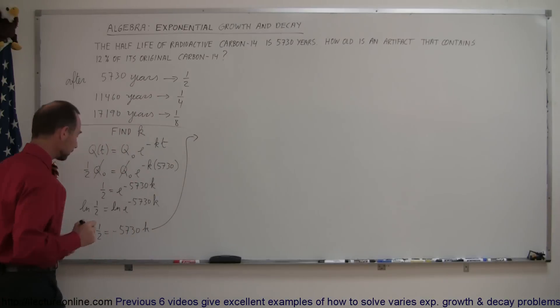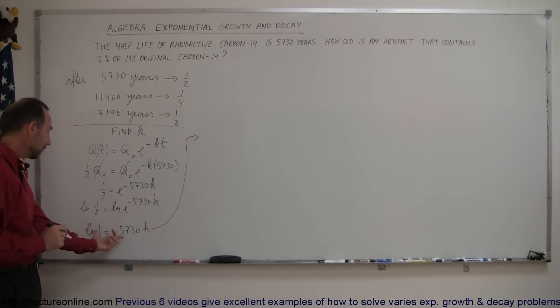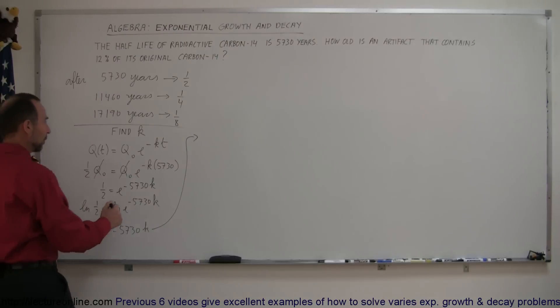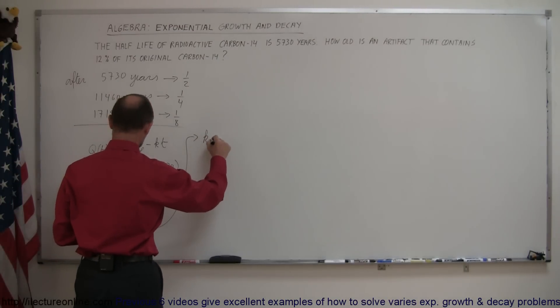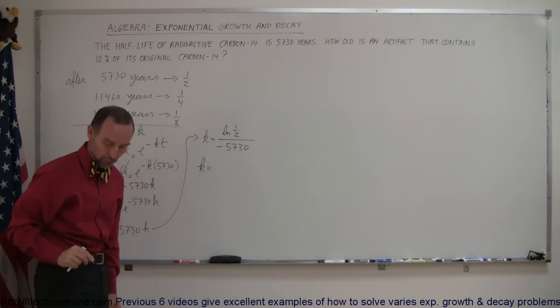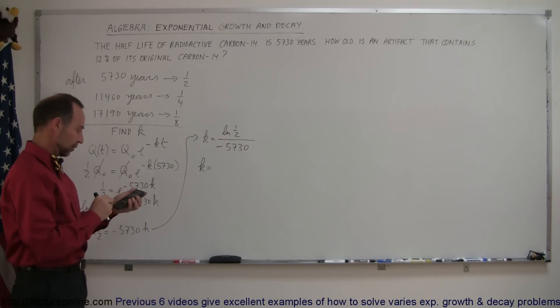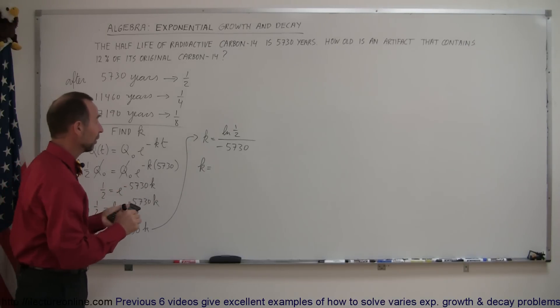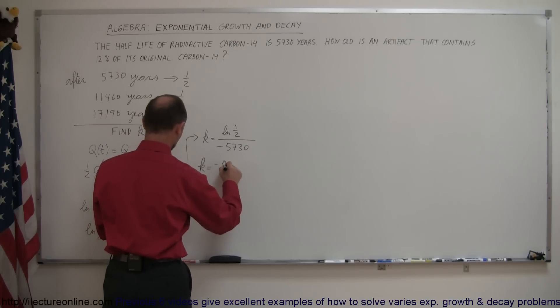And, continuing on over here, we could solve this for k by dividing both sides by minus 5,730 and reversing the equation. So we have k is equal to the natural log of one half divided by minus 5,730. And so, finally, k is equal to the natural log of 0.5. So, again, here's that familiar number, minus 0.693.